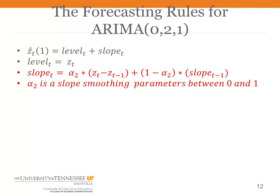And each period, we update the slope by taking alpha 2 times the most recently observed difference and 1 minus alpha 2 times the previous slope. Alpha 2 would be found by using solver to minimize your mean squared error for your forecast.